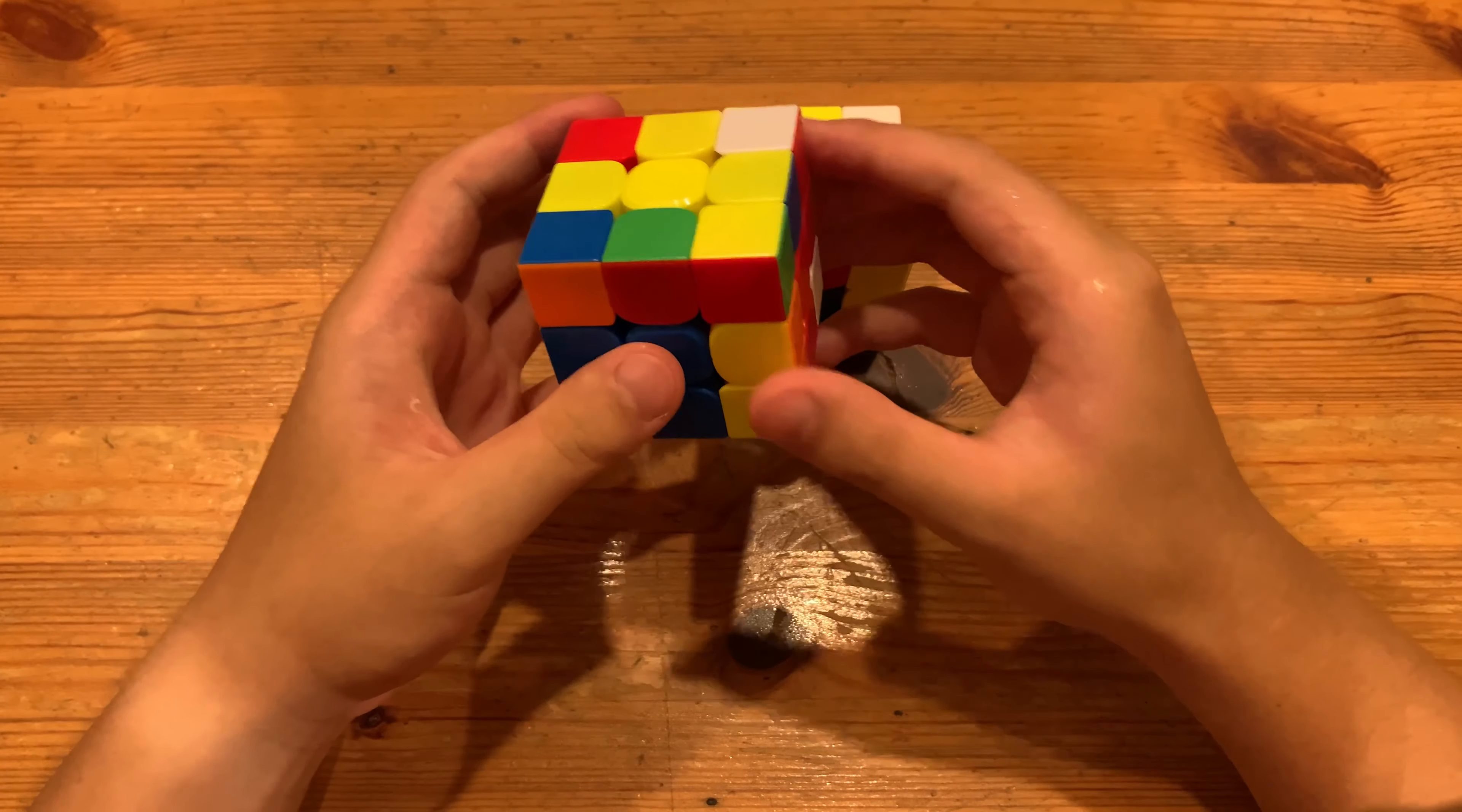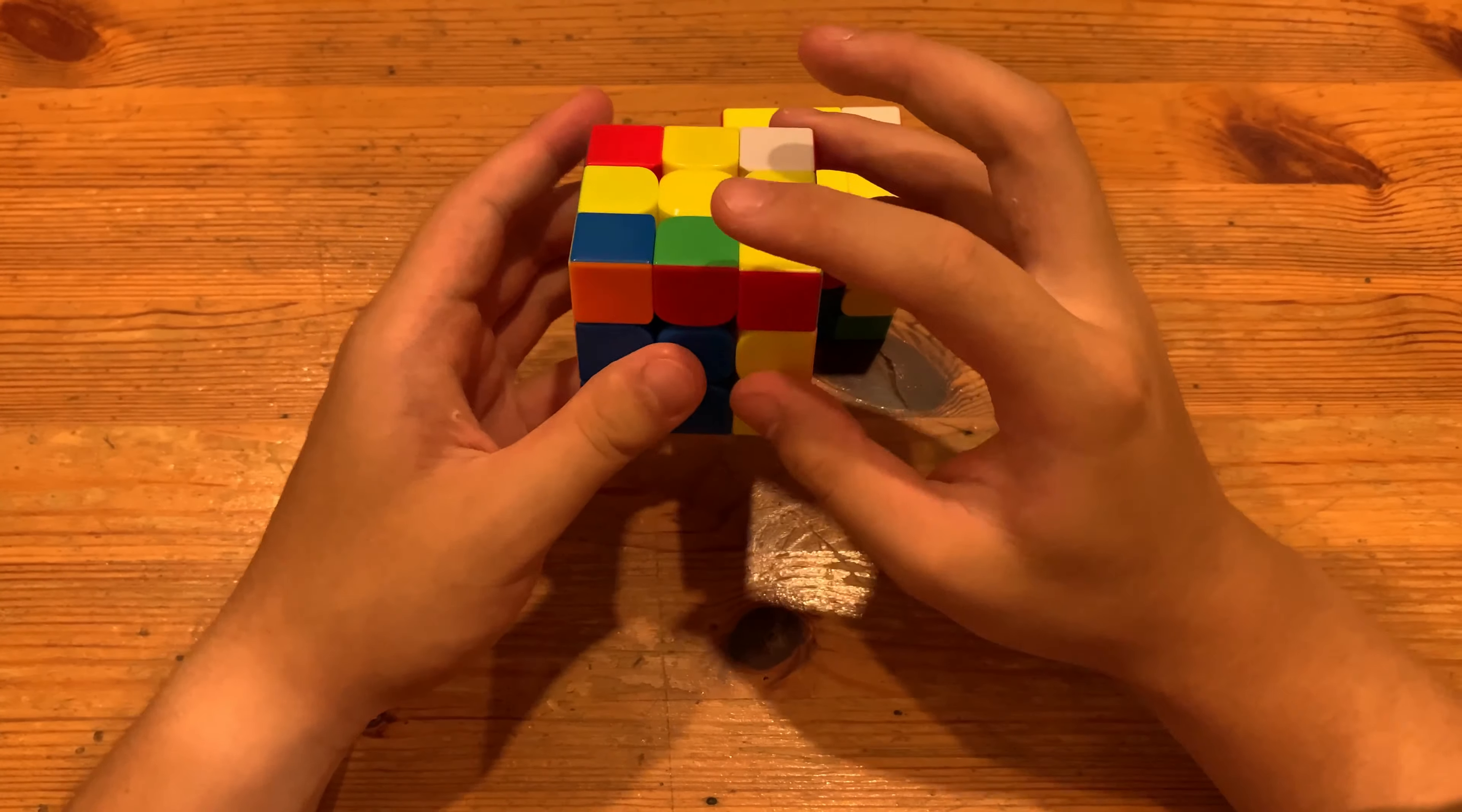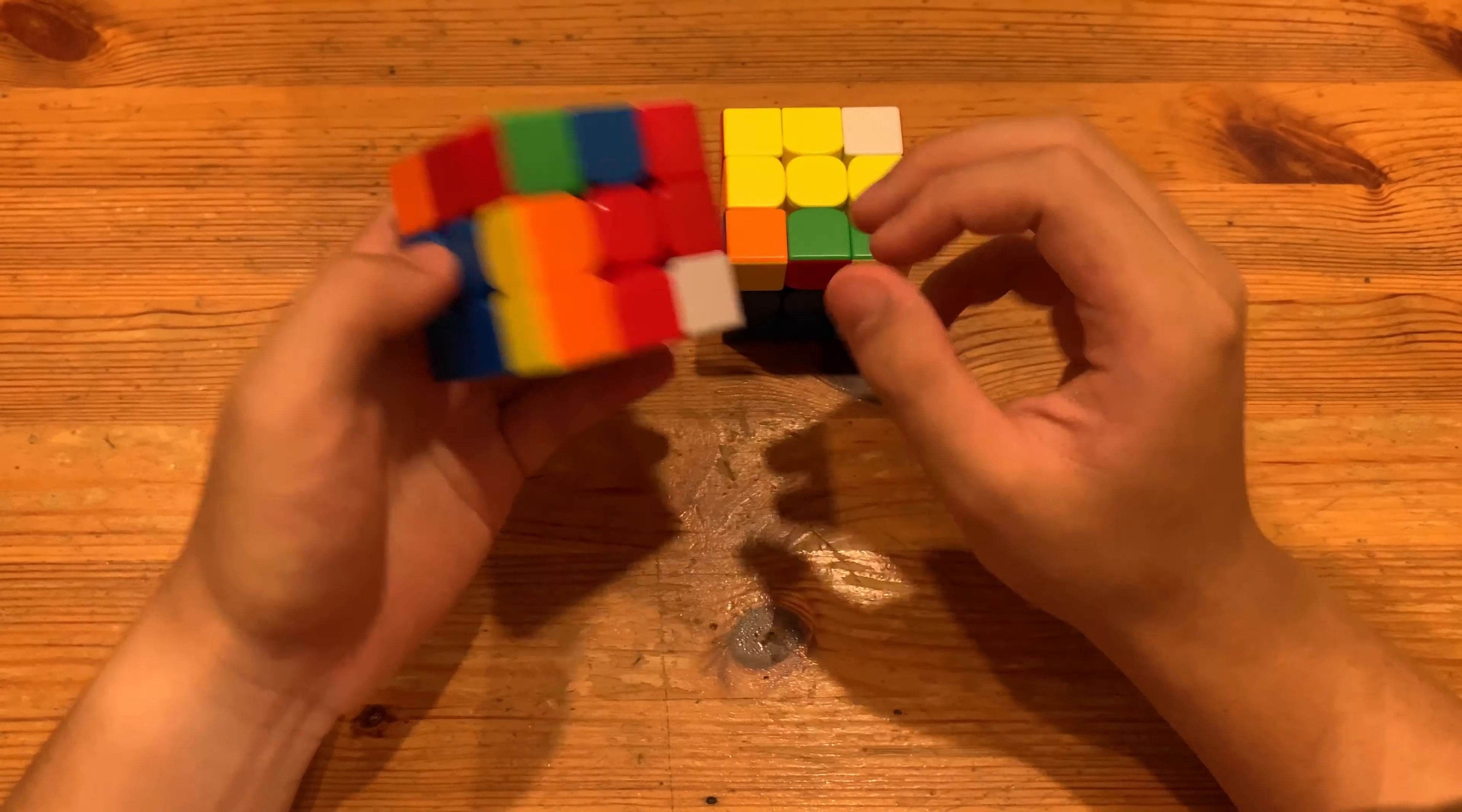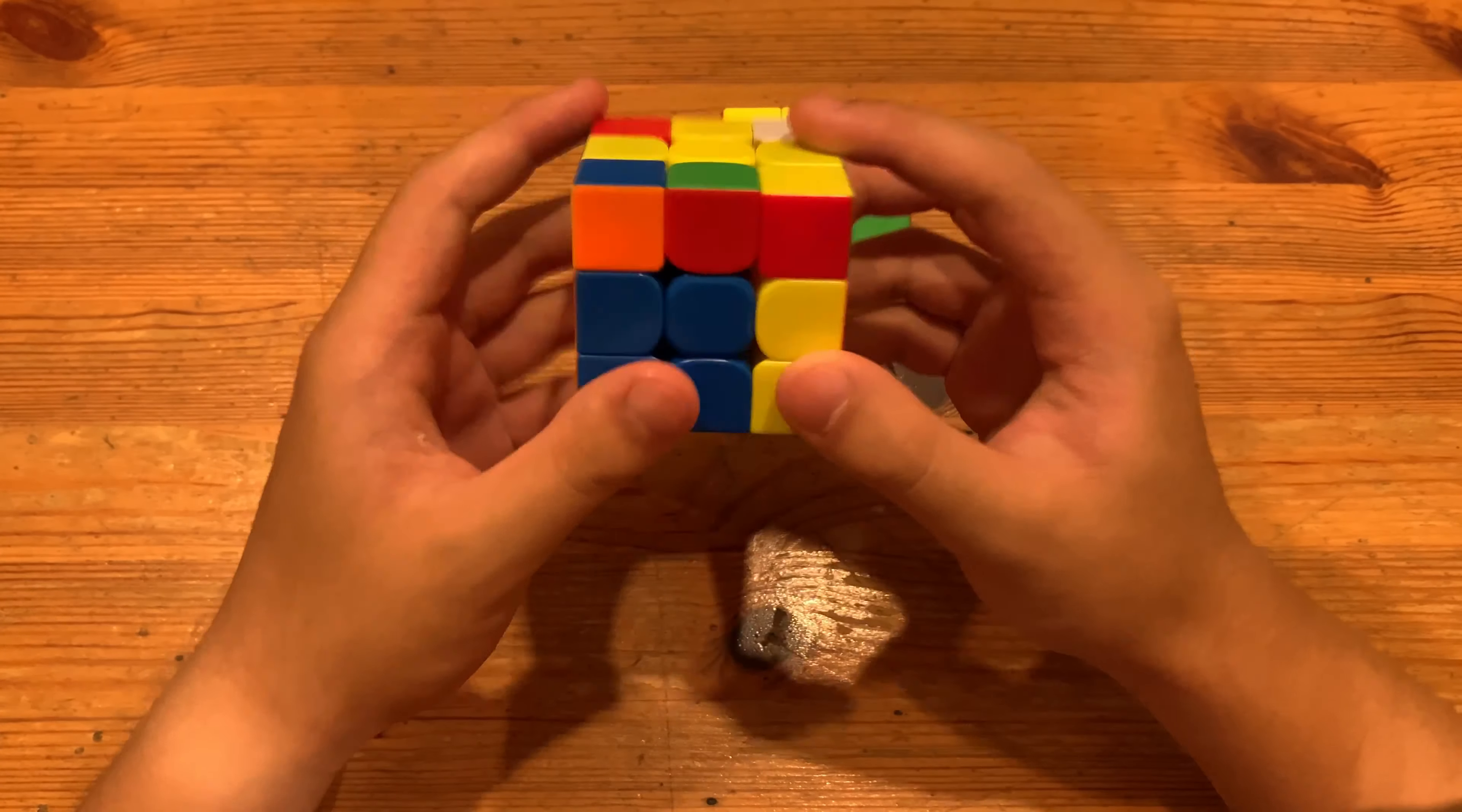So normally you'll probably just solve this pair first with something like that, then you'll have this pair. Or if you somehow didn't see this pair, you would solve the other pair instead. But there are two ways to solve it much faster.